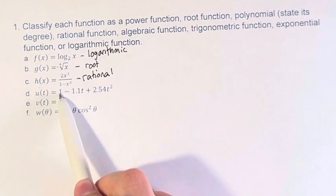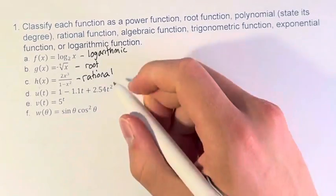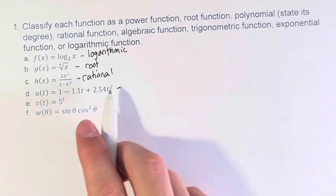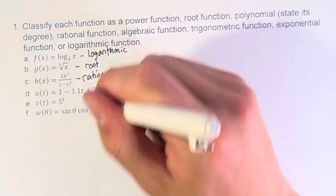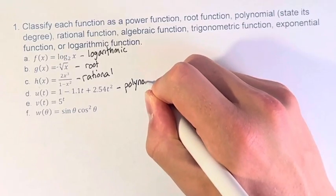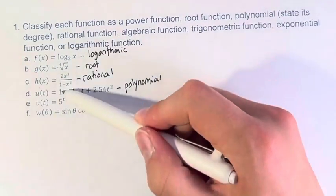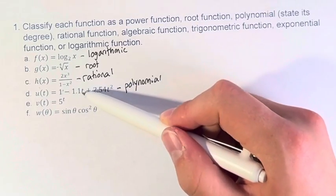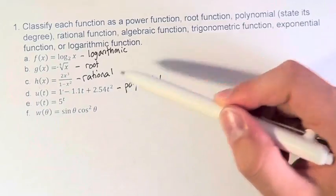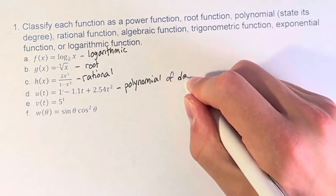u of t is equal to 1 minus 1.1t plus 2.54t squared. This is the sum or difference of different terms of varying exponents for a singular variable. So this is a polynomial. You will notice that the highest exponent, this is 1 times t to the 0, 1.1 times t to the 1, 2.54 times t to the 2. This 2 is the highest exponent, so it's polynomial of degree 2.